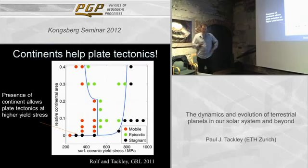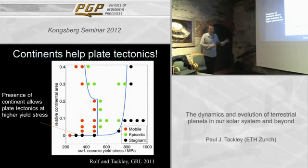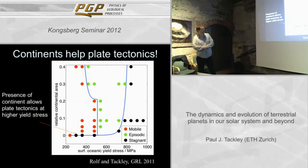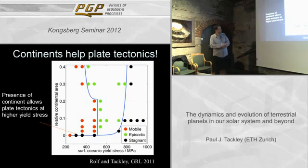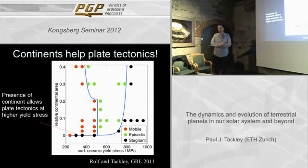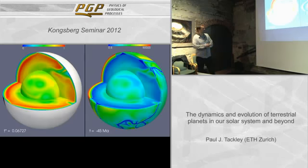One quantitative difference is that continents influence whether or not you have plate tectonics. In a regime diagram of relative continental area versus yield stress, with no continent there's a transition between mobile and stagnant lid at a relatively low yield stress. When a continent is present, this critical yield stress is substantially higher — so continents help plate tectonics. It's easier to get plate tectonics when continents are around.